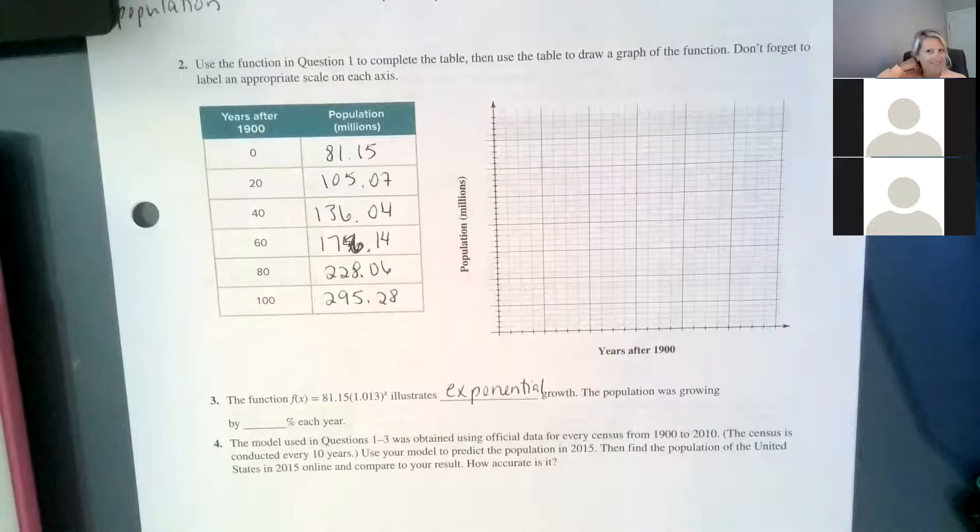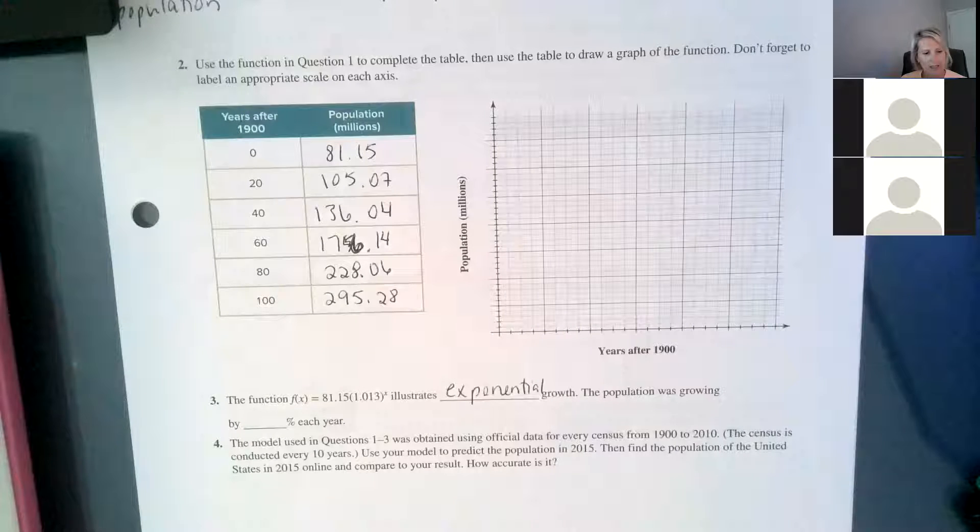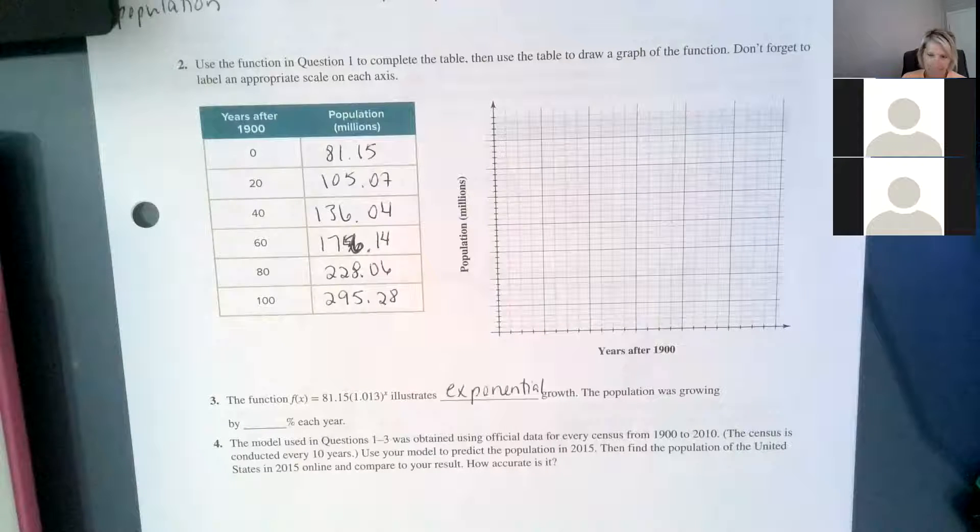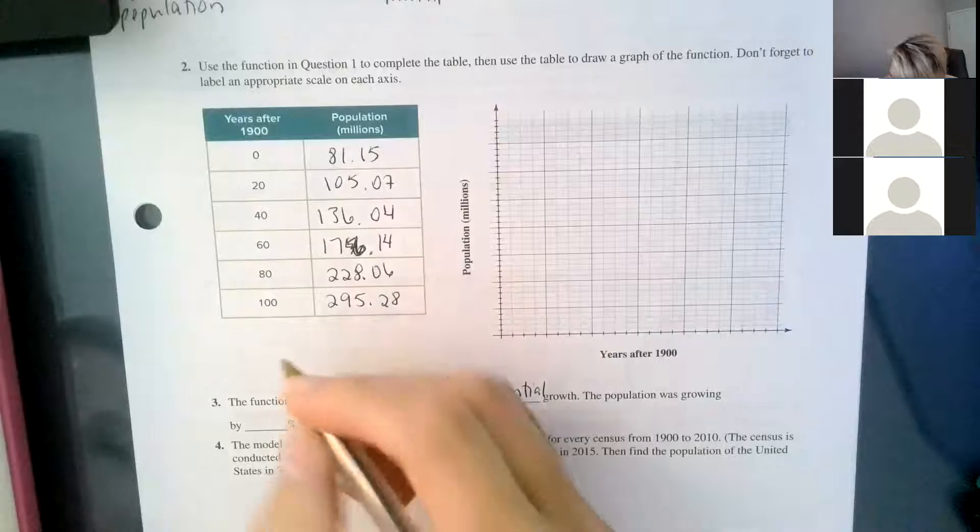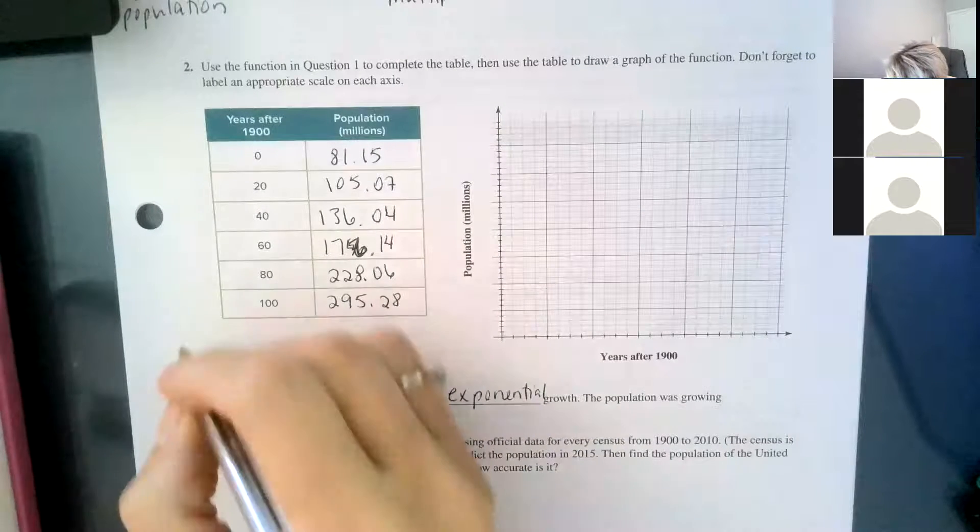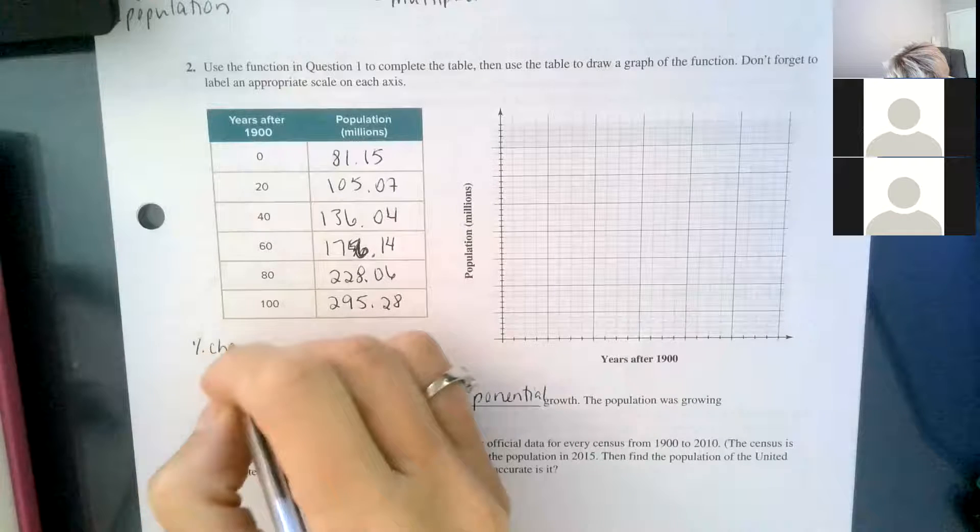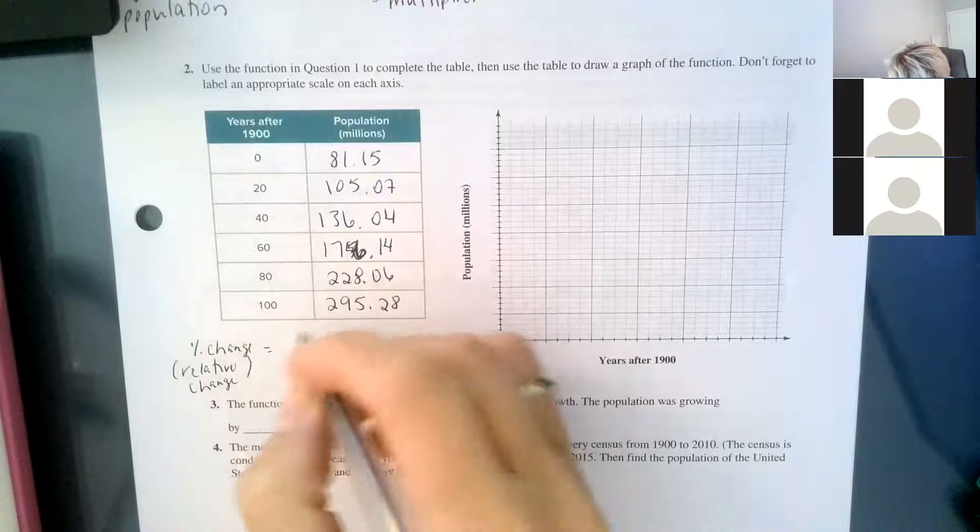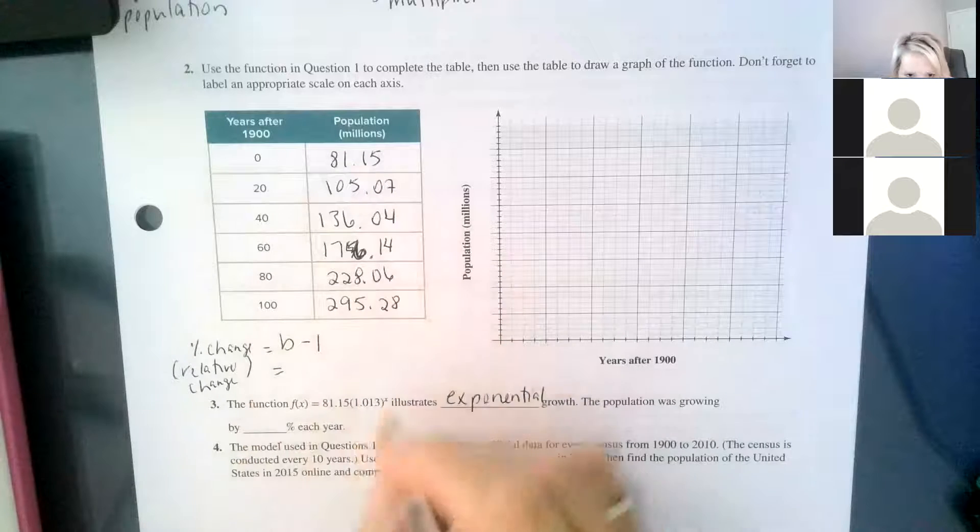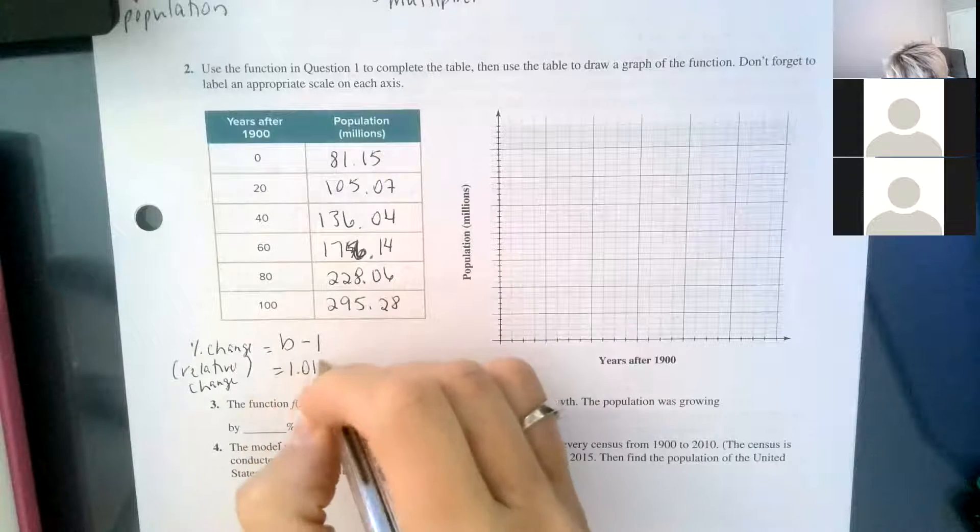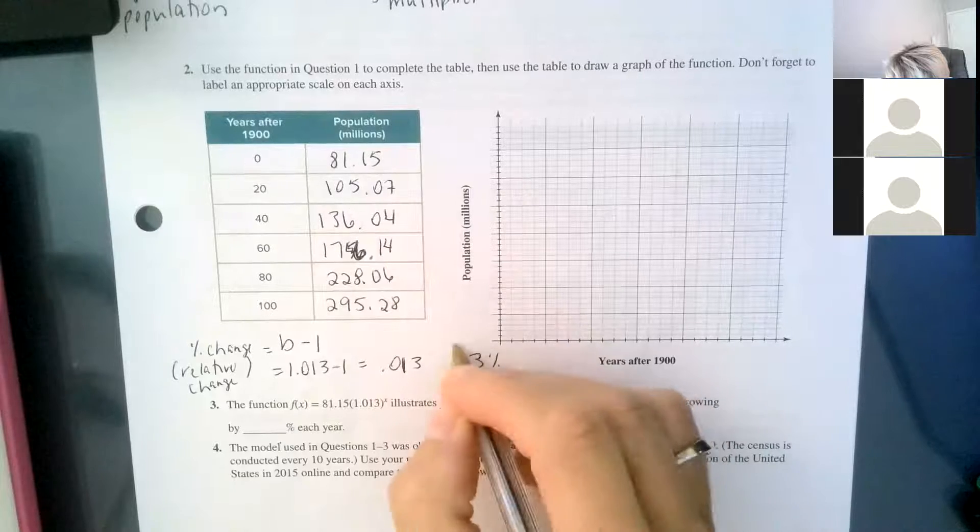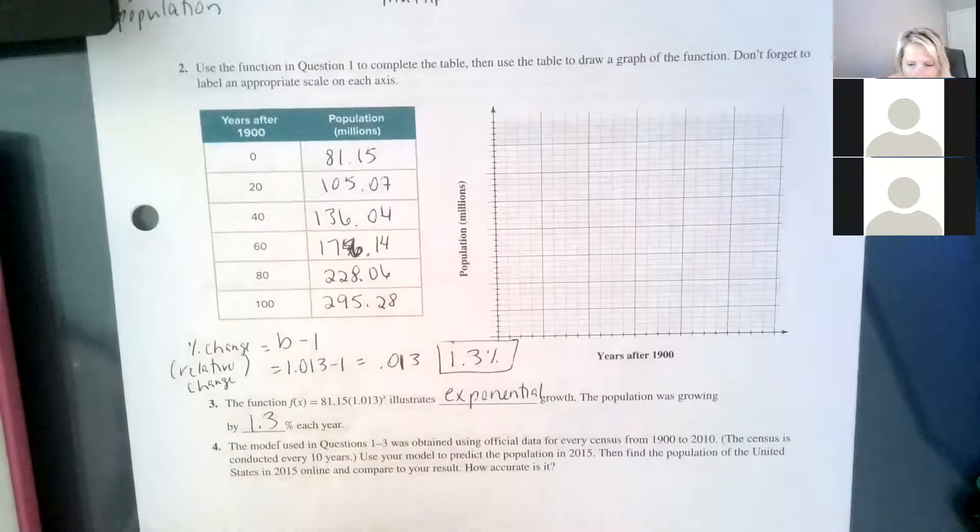Is it 1.3%? I would agree. So our growth factor, if we want to find the percent change or we said relative change, we're going to take B and subtract 1. B is our multiplier. So we're going to take 1.013 and subtract 1, and we get 0.013. That's our relative change. And turn it into a percent, it's 1.3%.